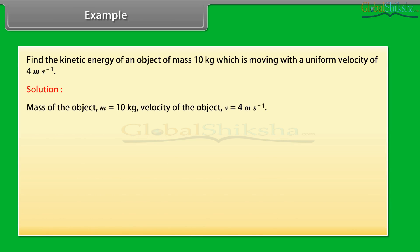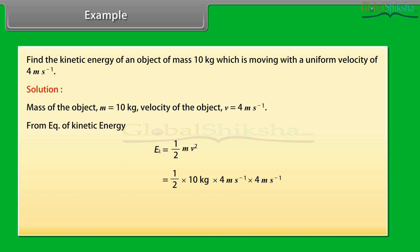Solution. Mass of the object M = 10 kg. Velocity of the object V = 4 m/s. From the equation of kinetic energy: KE = ½ × 10 kg × (4 m/s)² = ½ × 10 × 16 = 80 joules. Hence the kinetic energy of the object is 80 joules.